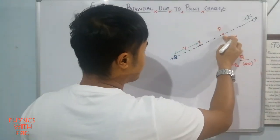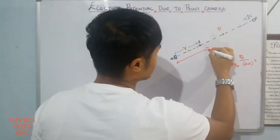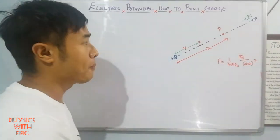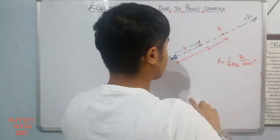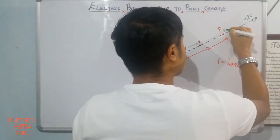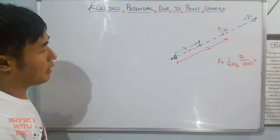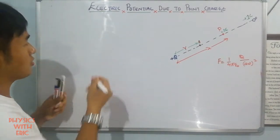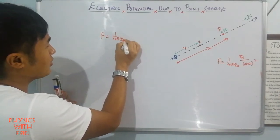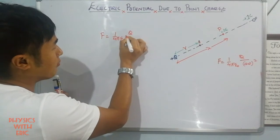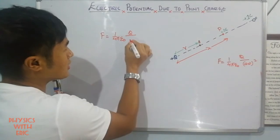Suppose point P is at distance x from the source point charge Q. We place a unit positive test charge at point P. According to Coulomb's law, the force on the test charge is F = (1/4πε₀) × (q / x²), where x is the variable distance.